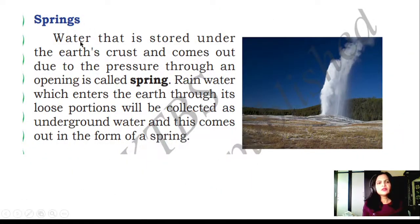Springs: The water that is stored under the earth's crust and comes out due to pressure through an opening is called a spring. Rain water which enters the earth through its loose portions will be collected as underground water and this comes out in the form of spring.